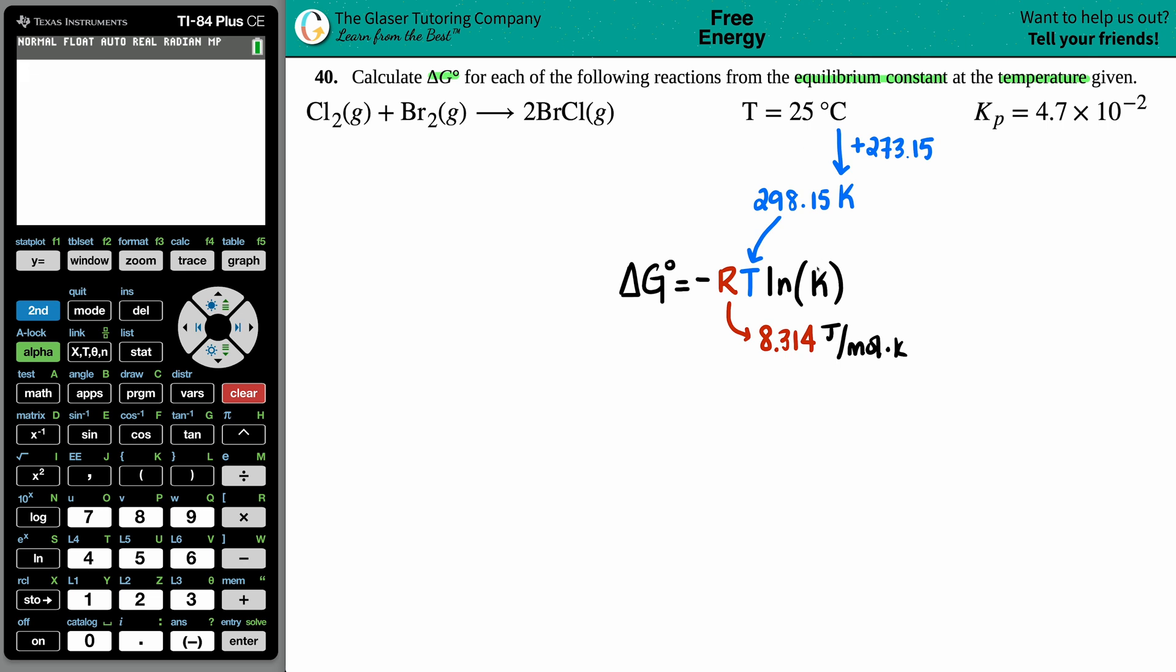Now I just need that equilibrium constant, capital K. They gave me a Kp. Doesn't matter that it's a p. There's so many different equilibrium constants - could have been a Kc, Ka, Kb, Ksp. Doesn't matter, just as long as it's an equilibrium constant value: 4.7 times 10 to the negative second. We have all the variables. Let's just plug it in and solve.